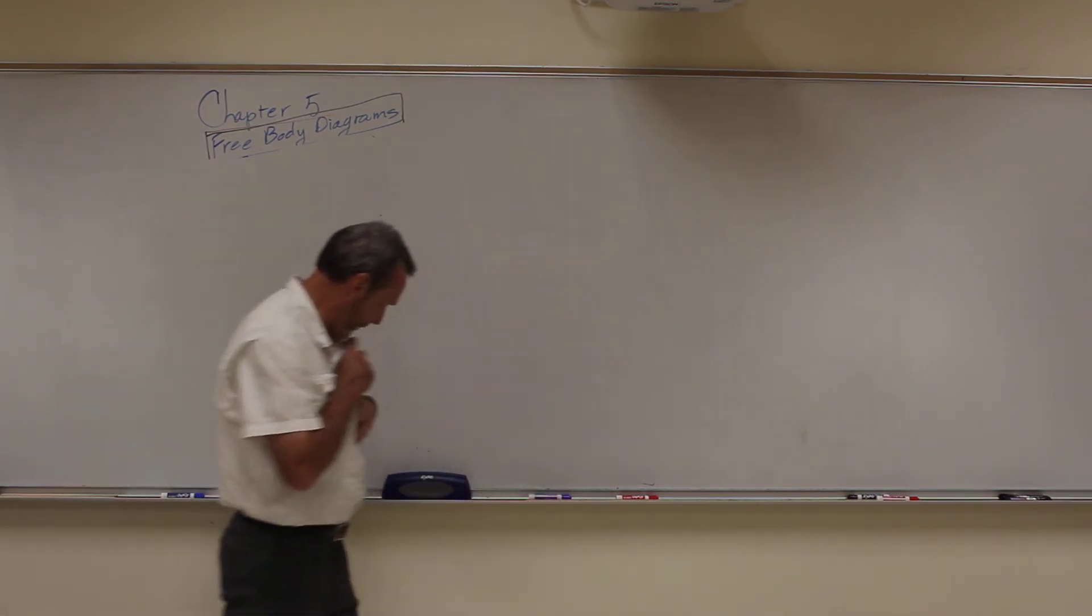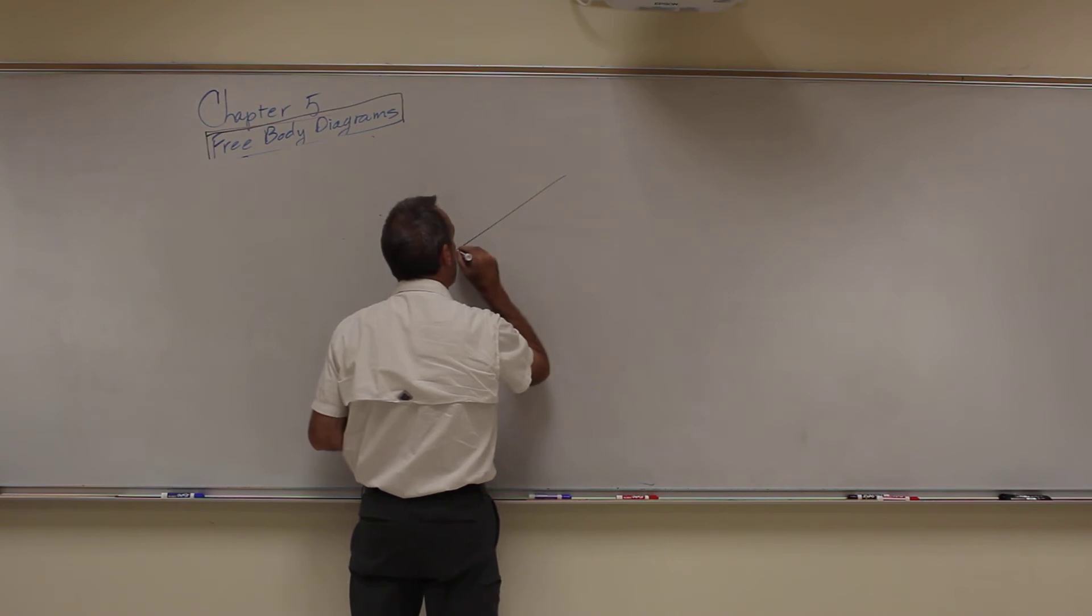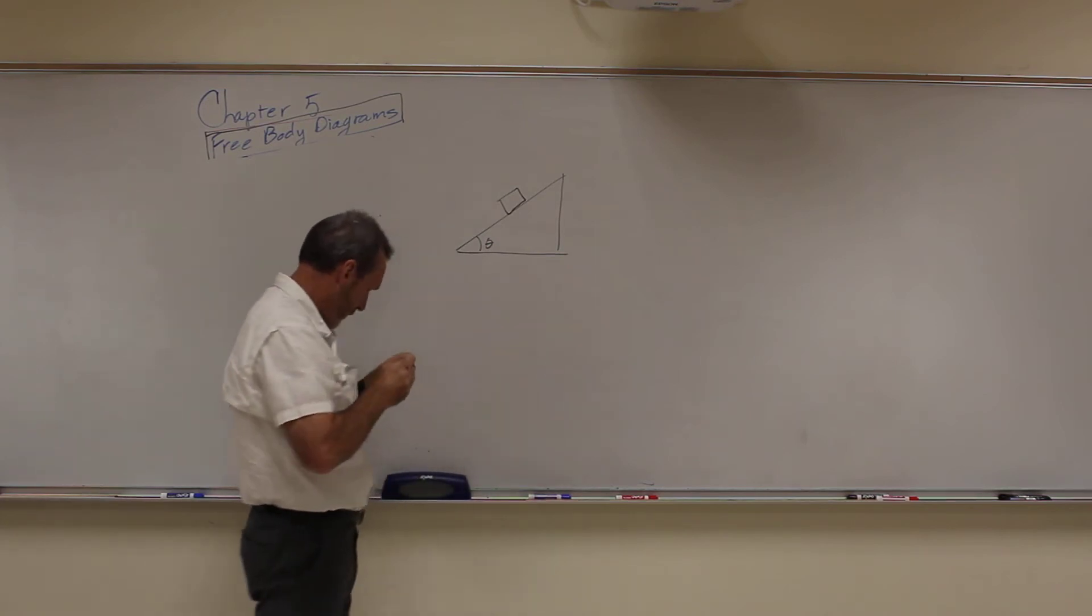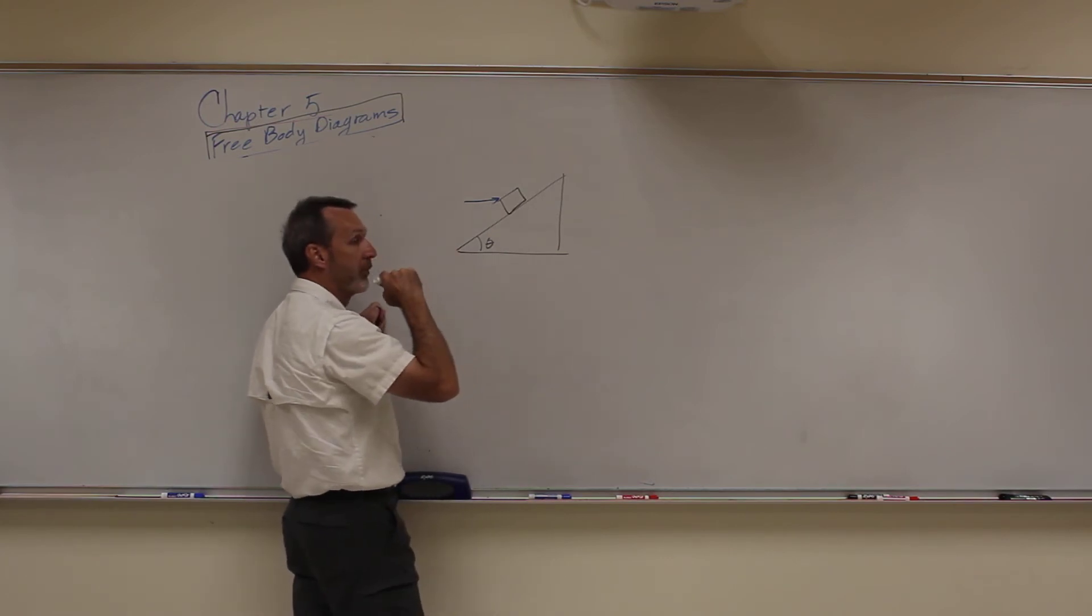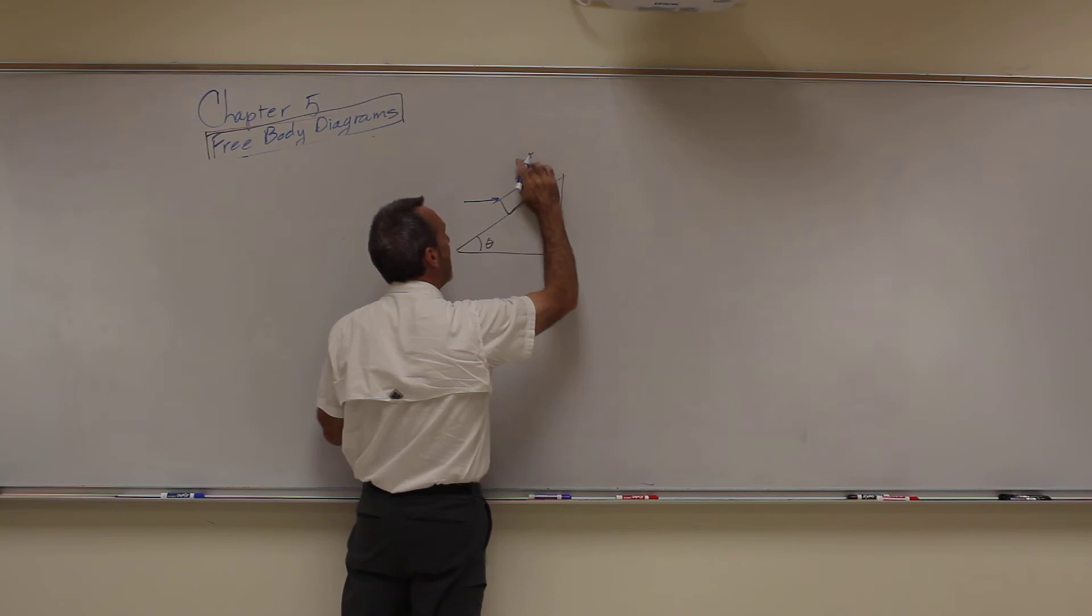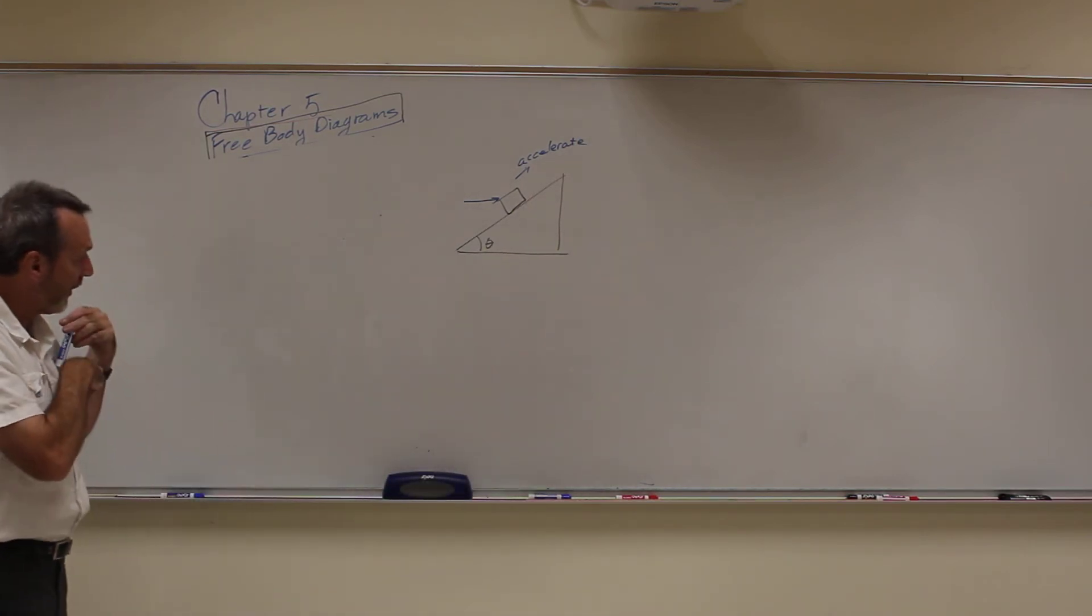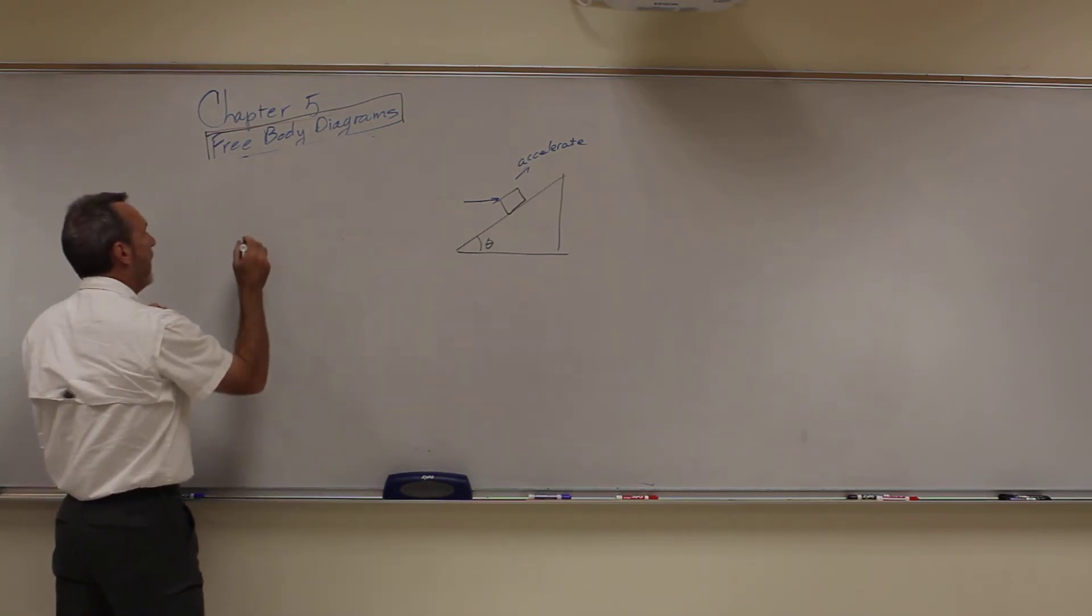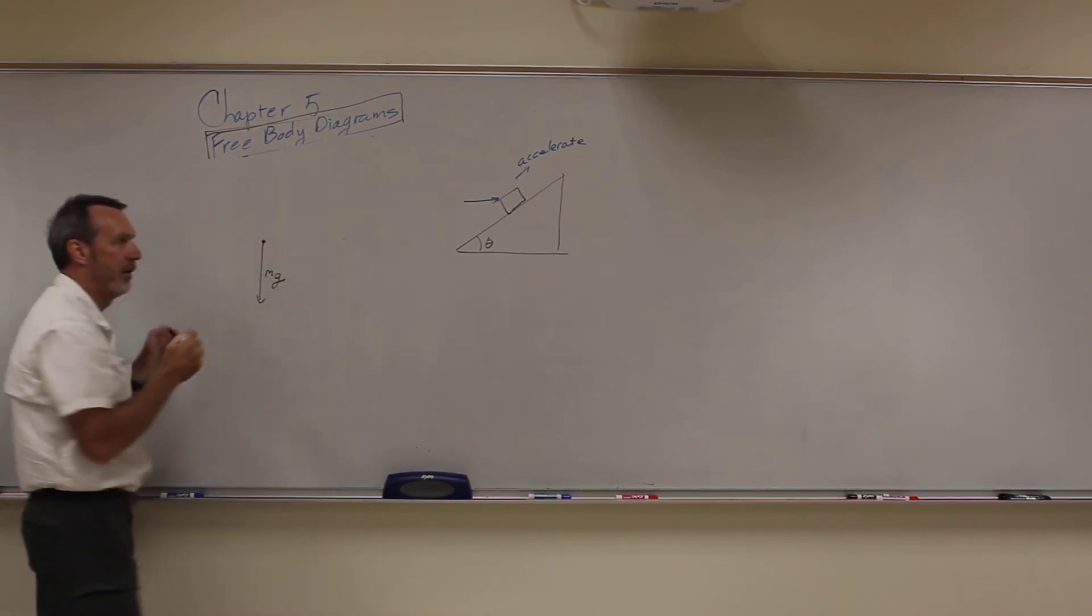I'm going to do one more case of a free body diagram. Let's say I have a block on an inclined plane again. But I'm going to apply a force on the block at an angle like this, and the block is going to accelerate up the incline. I want a free body diagram for that block. So, again, I'm going to draw my point here. Gravity is going to be down. The mass of the block times G.